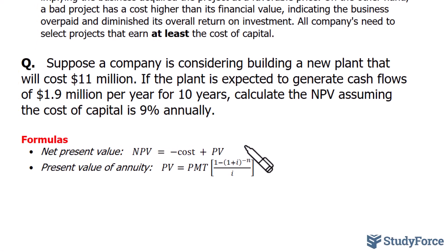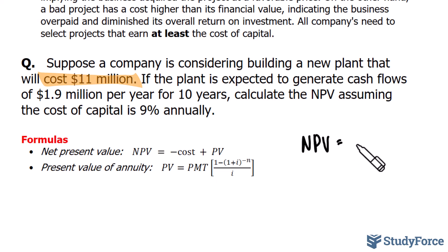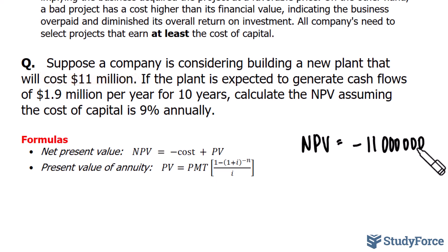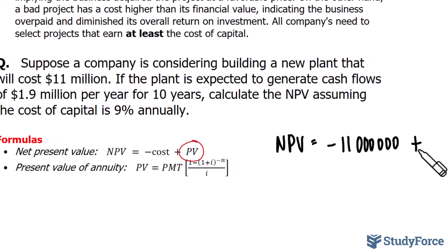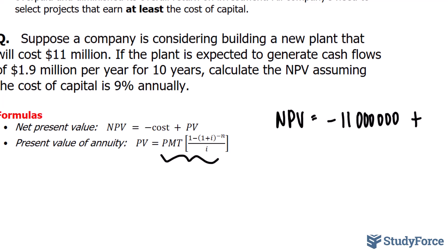Here's the formula we discussed earlier. NPV is equal to negative the cost — in our case, the cost is $11 million. So NPV is equal to negative $11 million, and we add to that PV, which is the present value. Now we have to calculate the present value of an annuity using this formula.